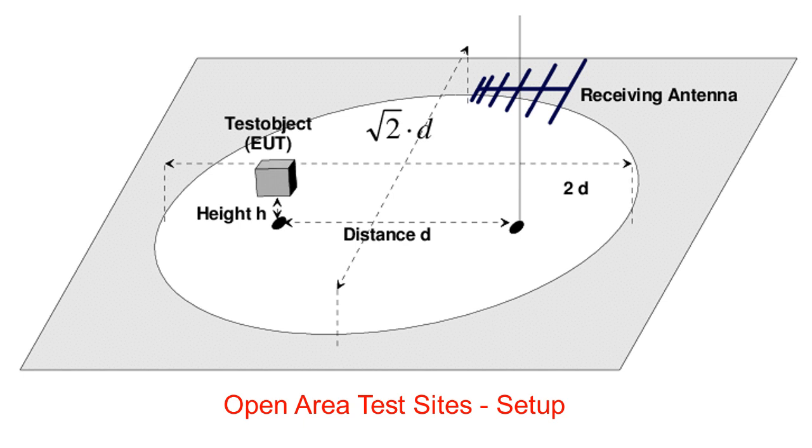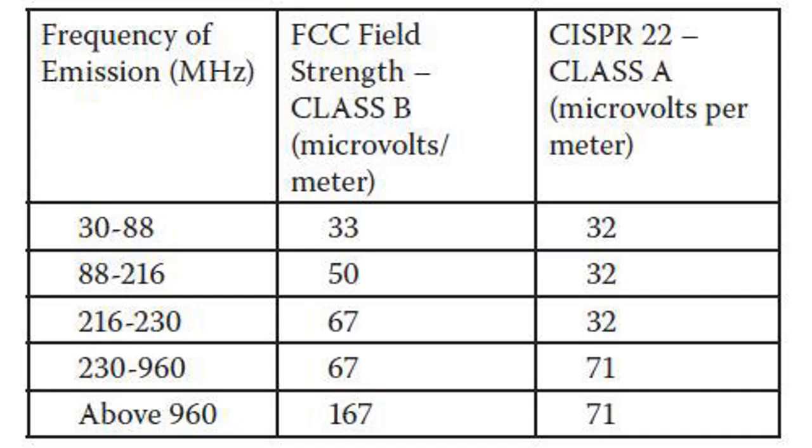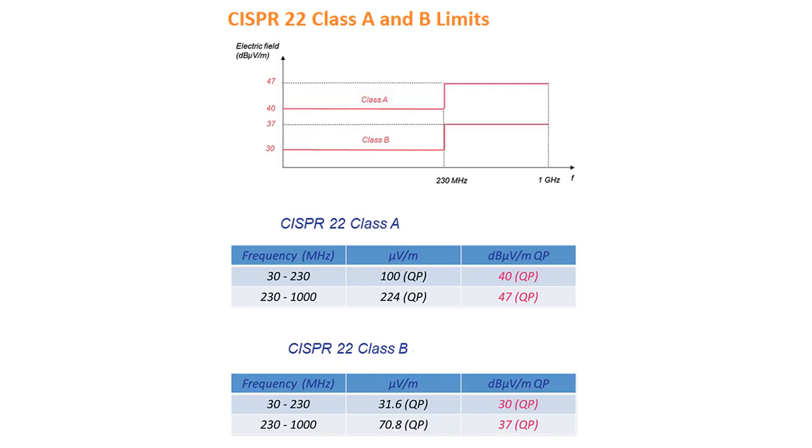Radiated emissions measurements - OATS, standards consider FCC and CISPR 22. FCC and CISPR 22 radiated emissions measurements are performed in the frequency range starting at 30 MHz and extending into the GHz territory. CISPR 22 allowable limits for both Class A and Class B devices are shown in figure.